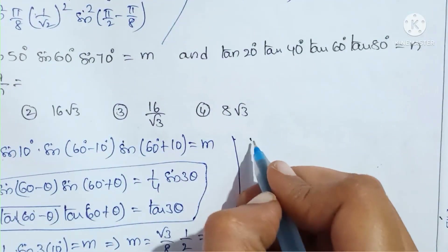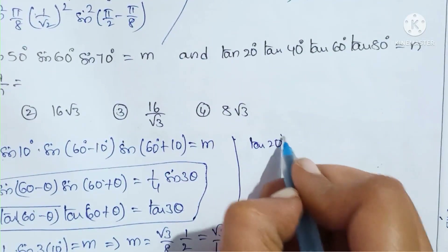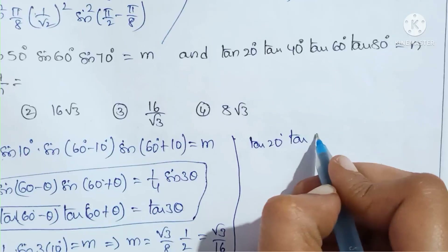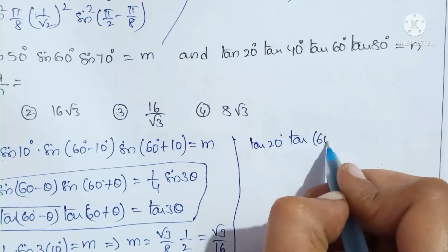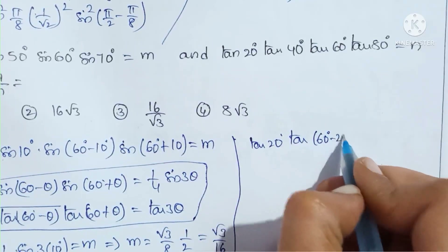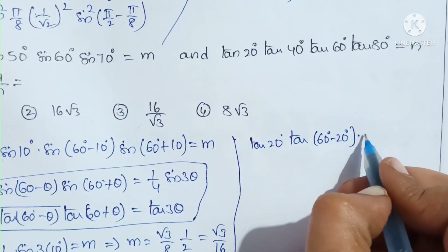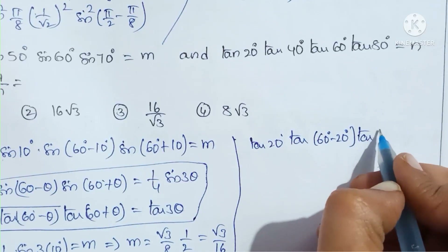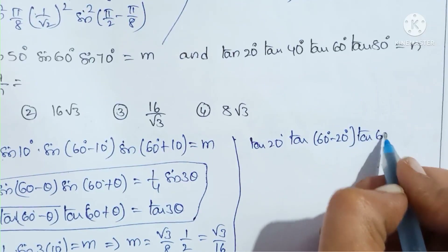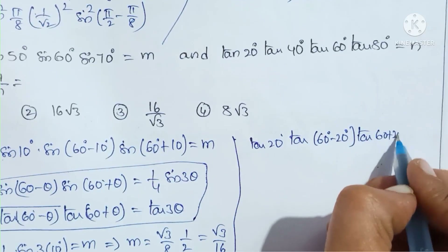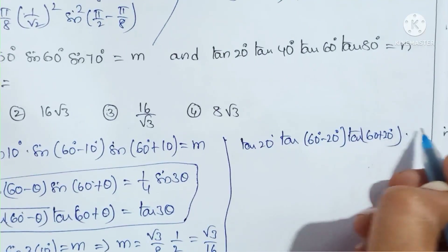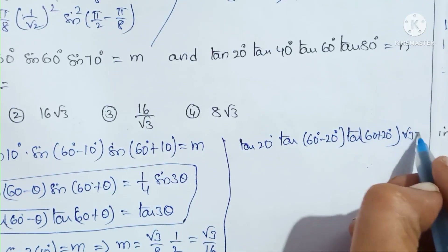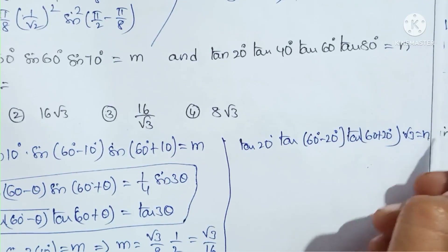Next, find N = tan(20°) × tan(40°) × tan(80°). We write tan(40°) = tan(60° - 20°) and tan(80°) = tan(60° + 20°). Also tan(60°) = √3 = N in the given problem. Using the formula tan(θ)tan(60° - θ)tan(60° + θ) = tan(3θ).